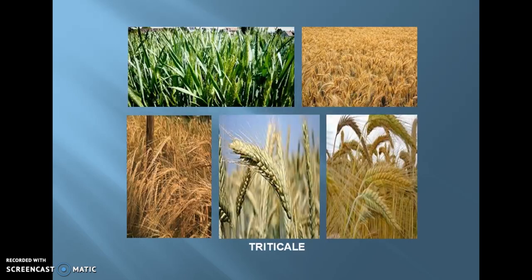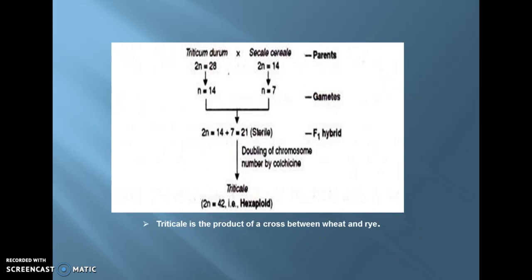Next is triticale. This triticale is a man-made cereal crop and it is the product of a cross between wheat and rye. Durum wheat and rye are crossed to obtain triticale, which is hexaploid. Triticale has certain beneficial effects: it is highly beneficial in managing diabetes, helps in increasing cell production in the body, protects infants against neural tube defects, boosts bone growth and prevents conditions like osteoporosis, reduces the risk of asthma and various skin conditions, and helps to improve metabolic efficiency as well as hair growth.